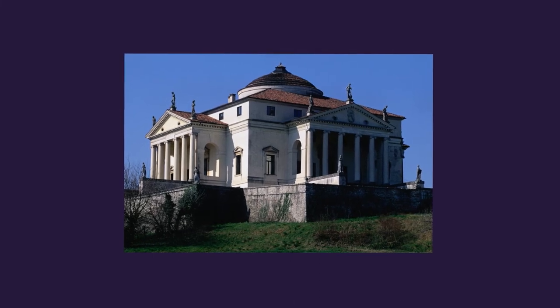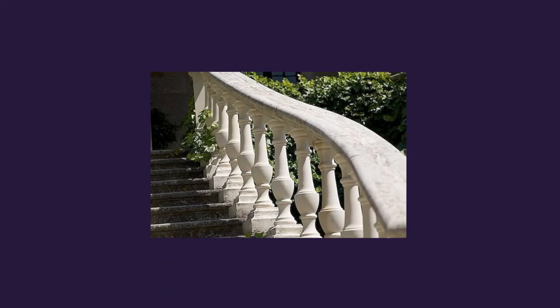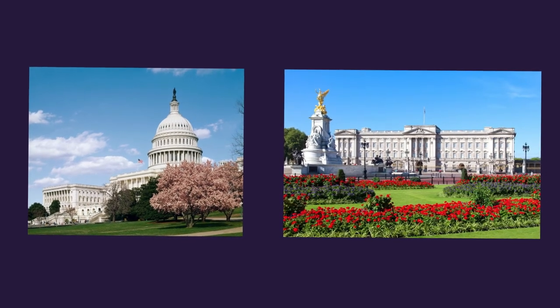Neoclassicism drew influence from the Palladian style of the Renaissance. Its features include symmetry, elegant lines, lack of clutter, triangular pediments, freestanding columns, balustrade balconies, pronounced cornices and grand-scale building. This style is widespread in the United States, Great Britain and Europe. Examples include the Capitol in Washington DC and Buckingham Palace in London.